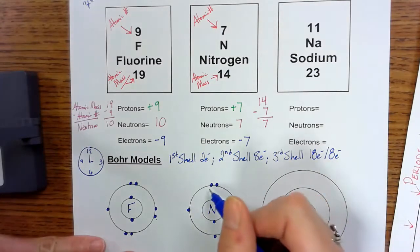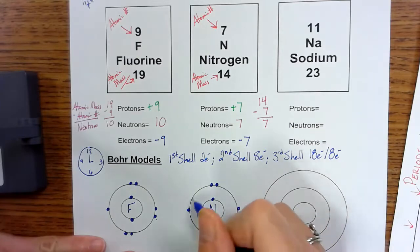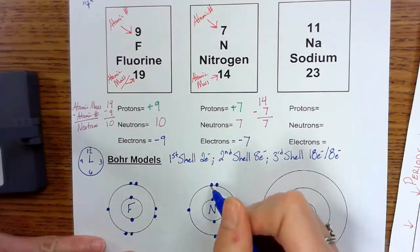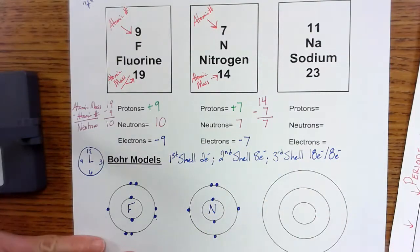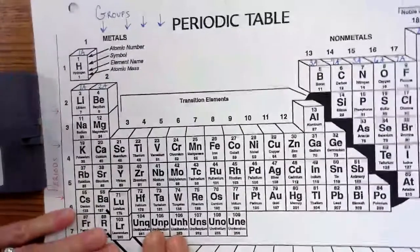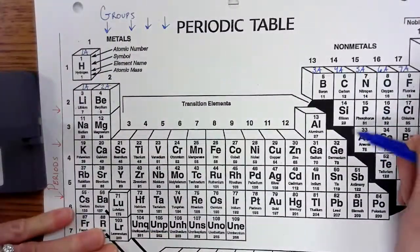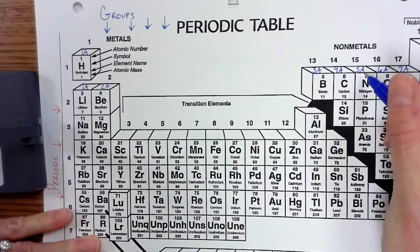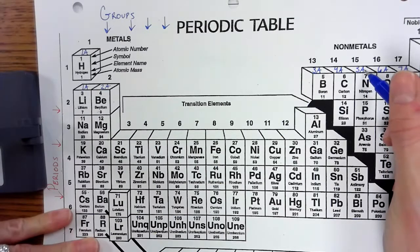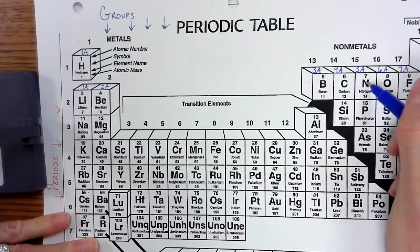And note, again, electrons in the outermost layer, those valence electrons. Here, nitrogen has one, two, three, four, five, five valence electrons. If I go to my periodic table, nitrogen belongs to group 15 or 5A. So again, five valence electrons are found in nitrogen.